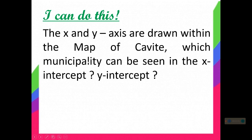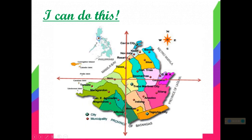The x and y axes are drawn within the map of Cavite — which municipality can be seen in the x intercept and which municipality can be seen in the y intercept? The municipalities that can be seen on the x intercept are Naik and Carmona. On the y intercept or y-axis, we have Tanza and Alfonso.